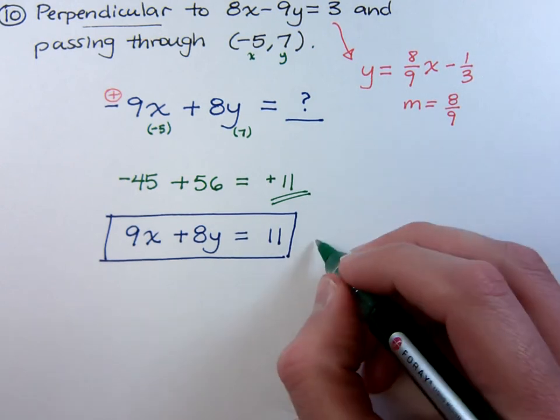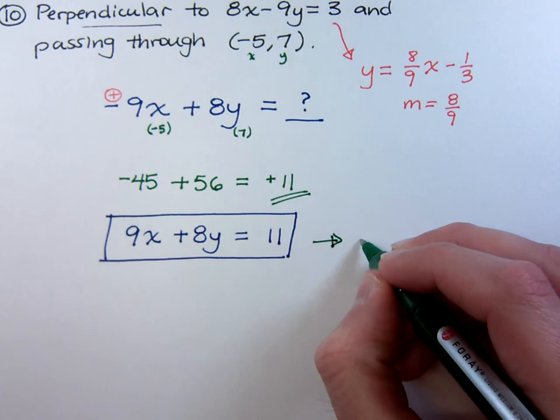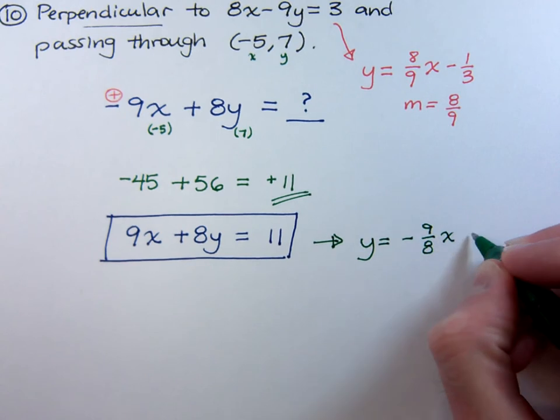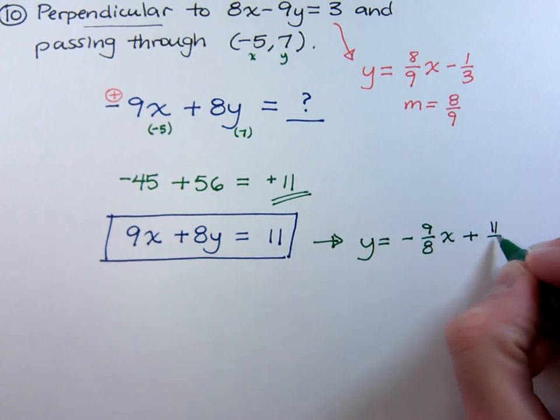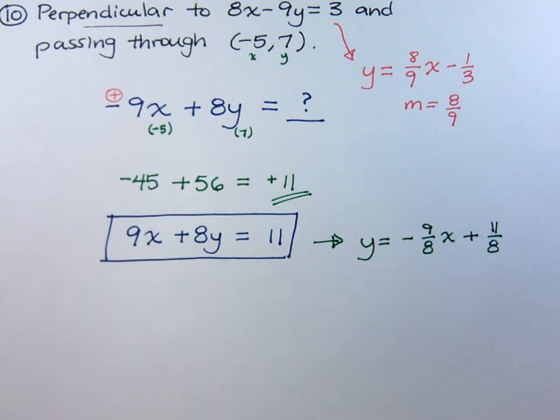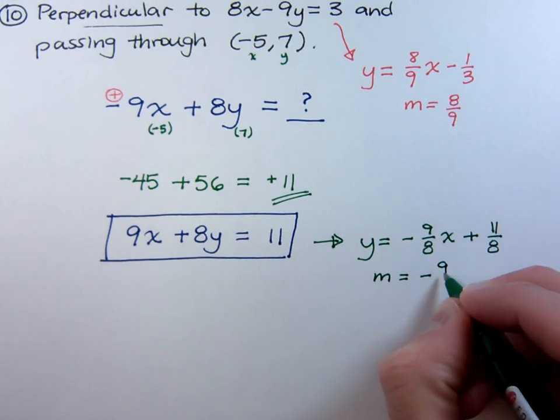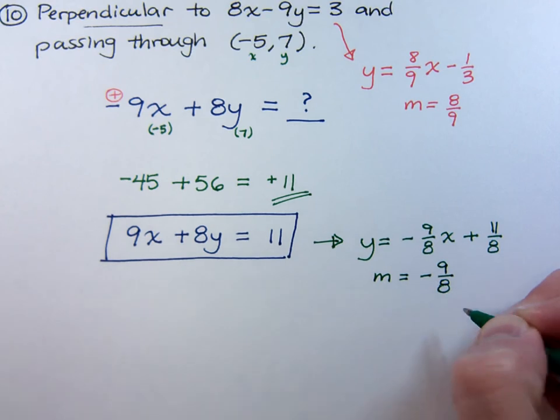If you take this and you solve it for y, you have y is equal to negative 9 eighths x plus 11 eighths, which means the slope for this guy is a negative 9 over 8.